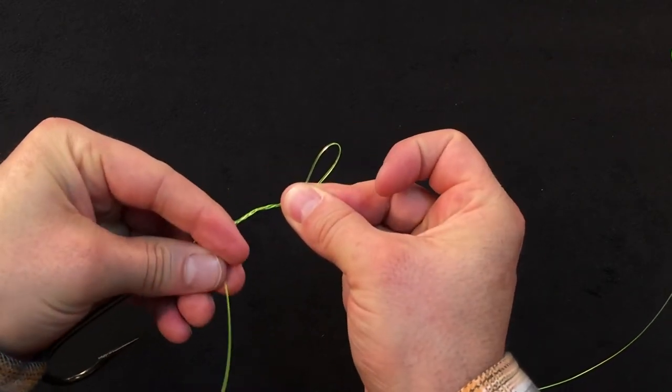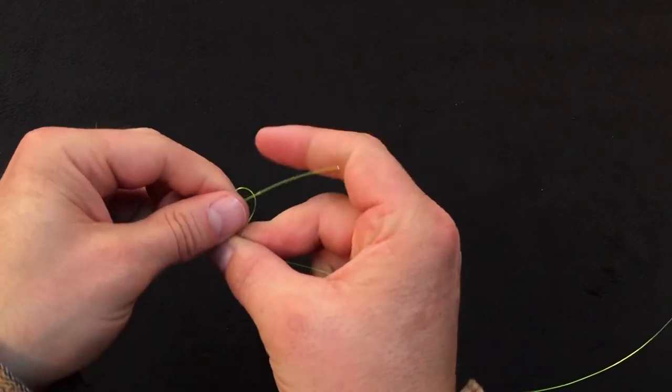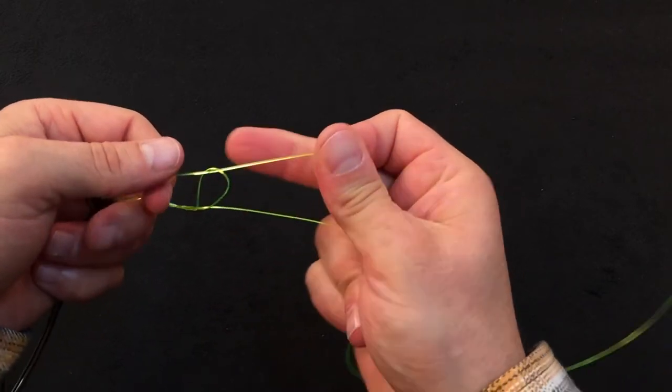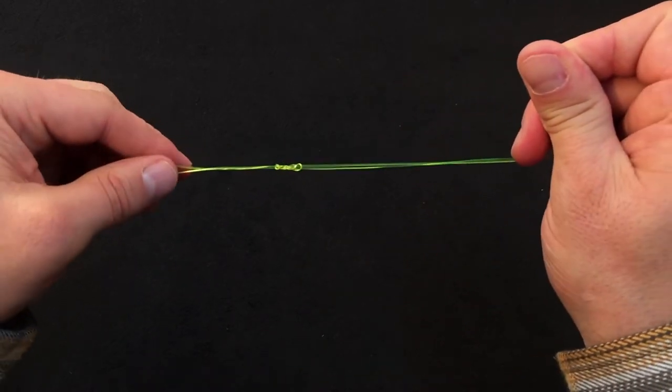Take that loop and take your tag end. You're going to take your tag end and pass it through the loop right there. You're going to draw that down. Draw the slack out of the loop as such.